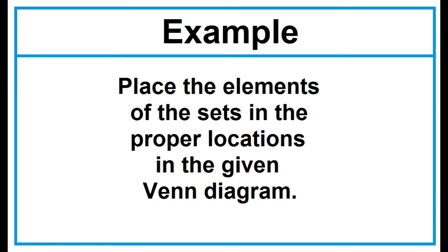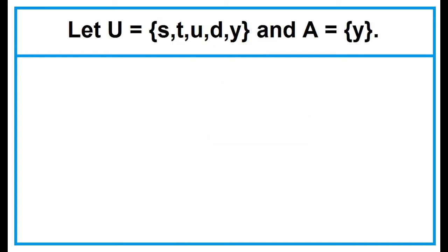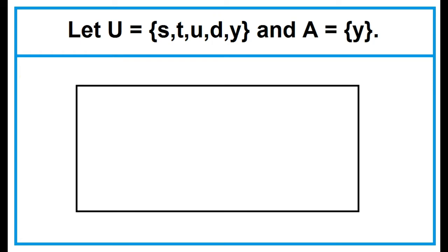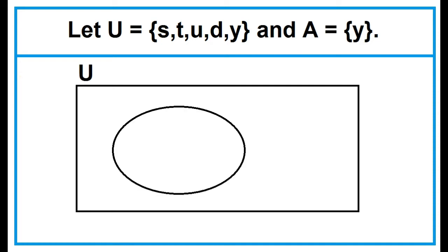Example: Place the elements of the sets in the proper locations in the given Venn diagram. Given set U and set A, draw a rectangle that represents the universal set and a circle inside the rectangle which represents set A. Then write the elements of set A inside the circle, and the elements of the universal set which are not in A outside the circle.